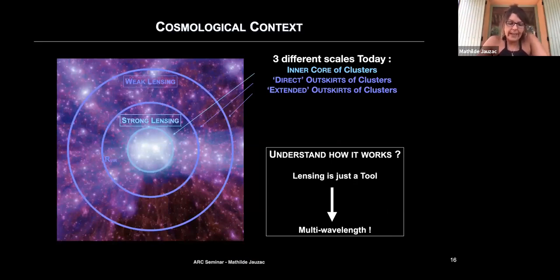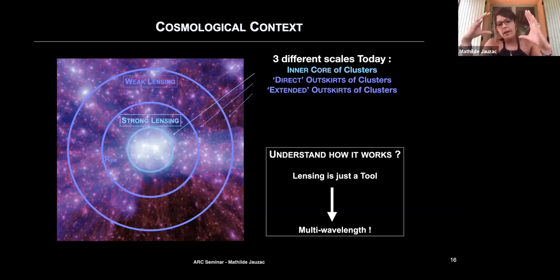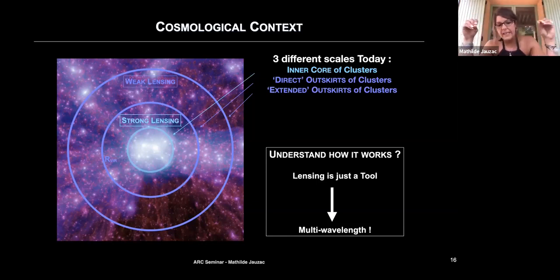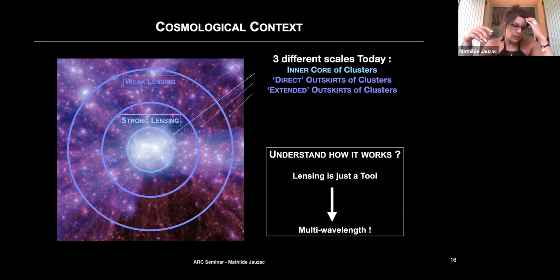I'll finish my introduction by showing the sketch you'll see on the top right corner of most of my slides, because I'm going to talk about three different scales: the inner core of the cluster with strong lensing, up to the virial radius with weak lensing, and then even further where you trace the infall of matter from large-scale filaments — like those in the Millennium II snapshot. But lensing is just a tool; you need to combine it with multi-wavelength observations to draw conclusions.